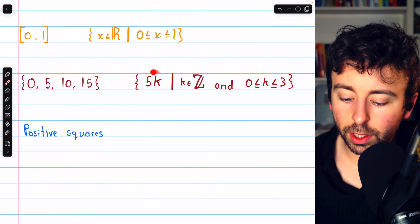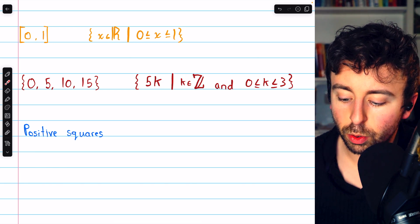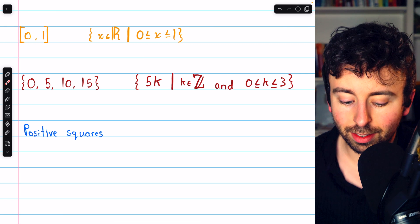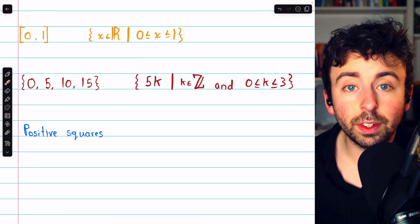So this is the set of all numbers 5k, where k is an integer that's between 0 and 3, including the endpoints. This is precisely this set: 0, 5, 10, and 15.